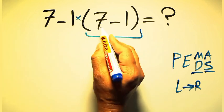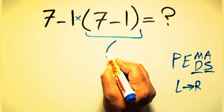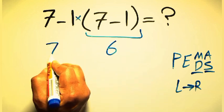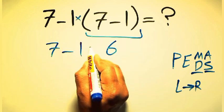So first this parentheses: 7 minus 1 gives us 6. So we have 7 minus 1 times 6.